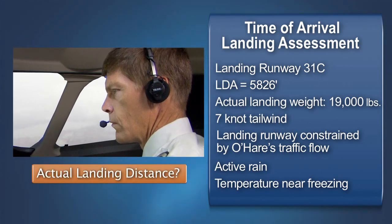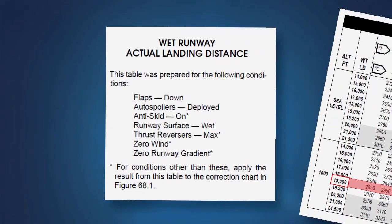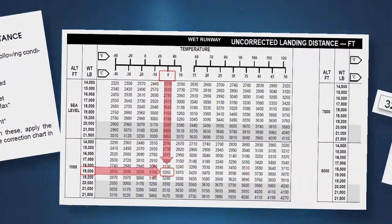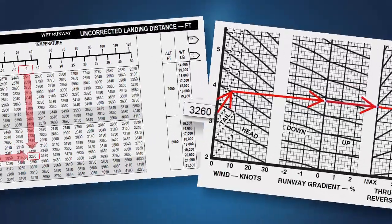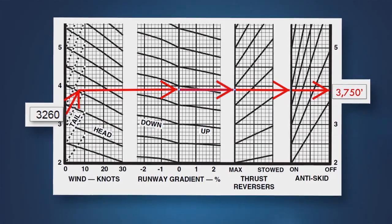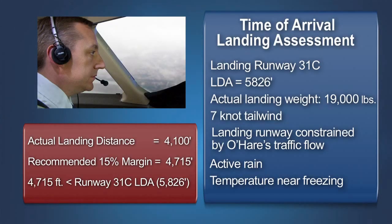Based on the ATIS information received, what would you consider when performing a landing distance assessment? At a minimum, we should consider the operational impacts of the wet runway and the tailwind. The assessment may be based on manufacturer-furnished advisory landing distance data for use on wet and contaminated runways. This data is an analytical computation that adjusts landing distances determined during certification for the detrimental effects on braking performance resulting from a particular type of contamination. While the data is not based on actual flight testing, it does allow flight crews to assess actual landing performance based on anticipated landing conditions.